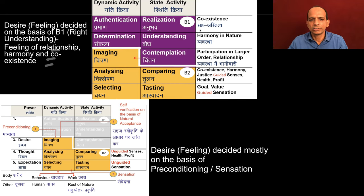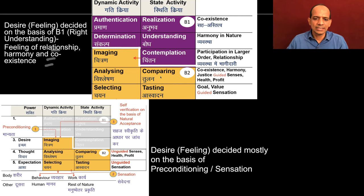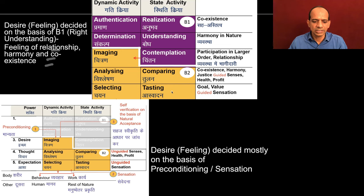So I am able to realize the coexistence. I am able to understand the harmony in nature. I am able to contemplate on the participation in the larger order, that's relationship. And when this happens, then the lower block is guided. And thus we have coexistence, harmony and justice, guided senses, health and profit at the level of comparing. And we have goal and value guided sensation at the level of testing.